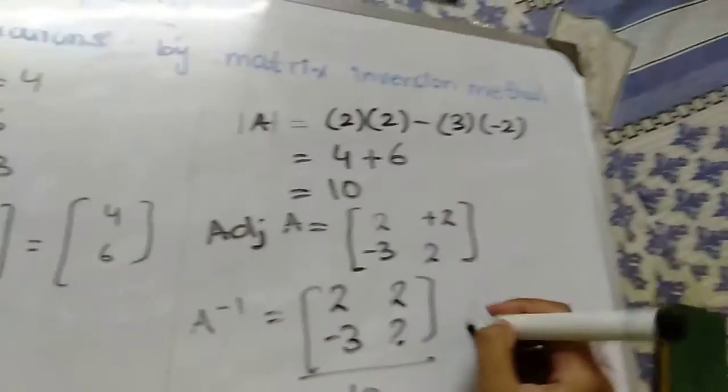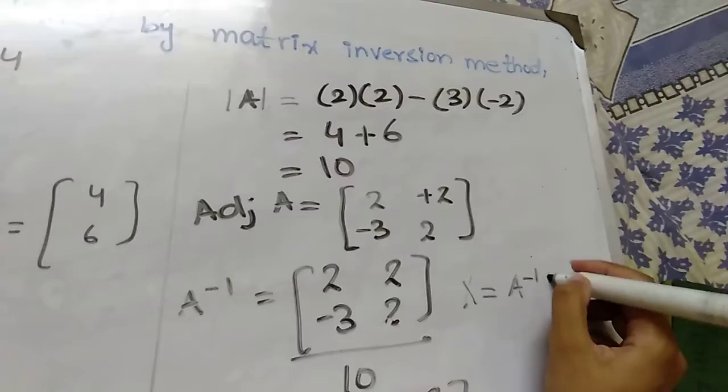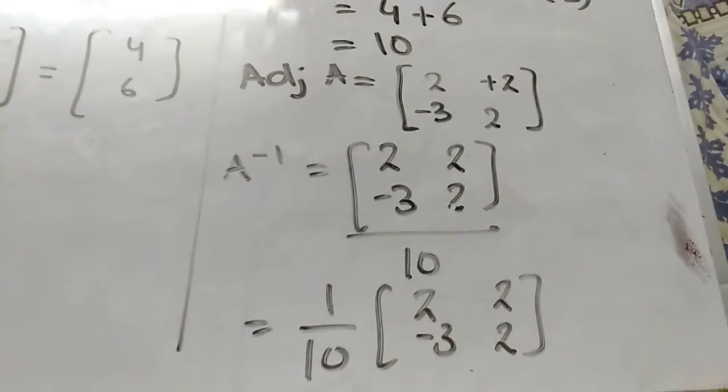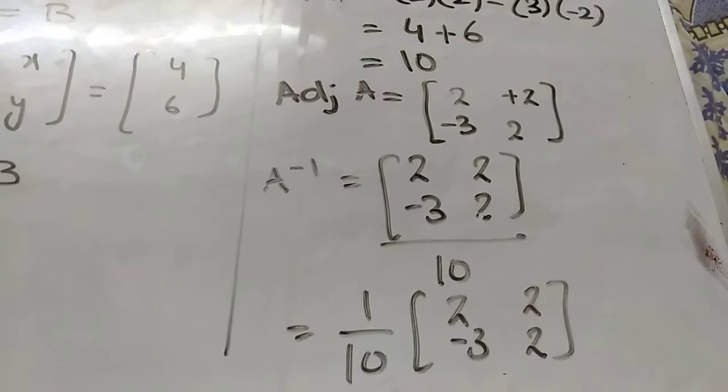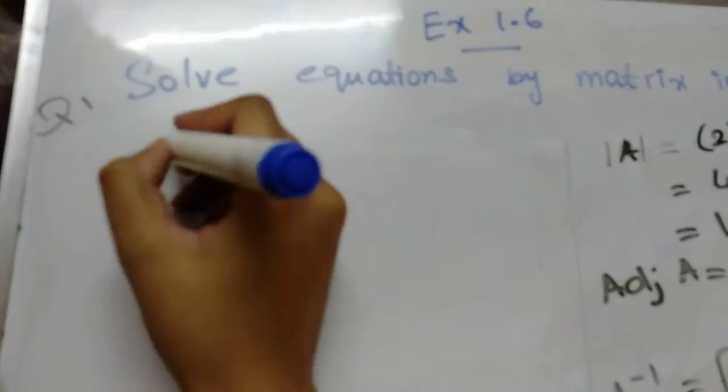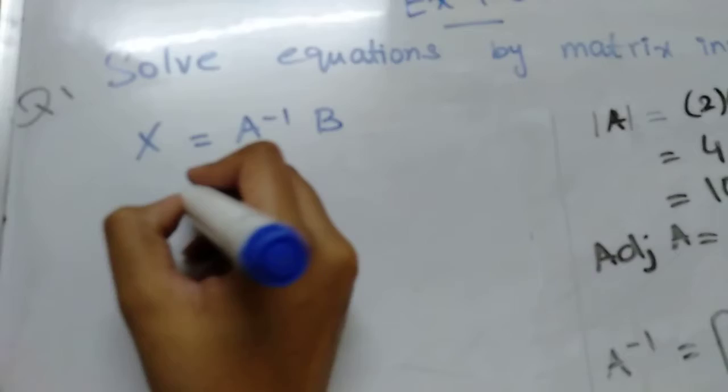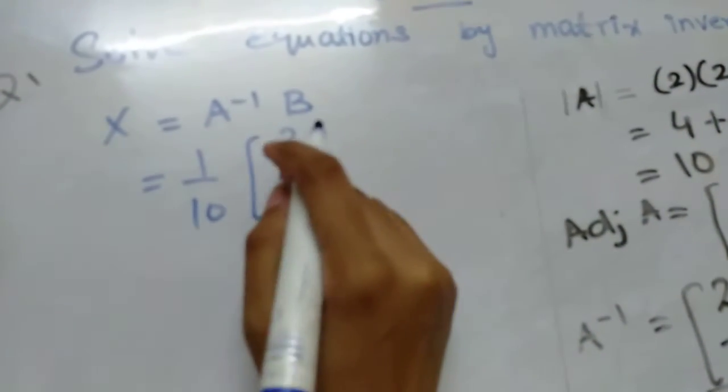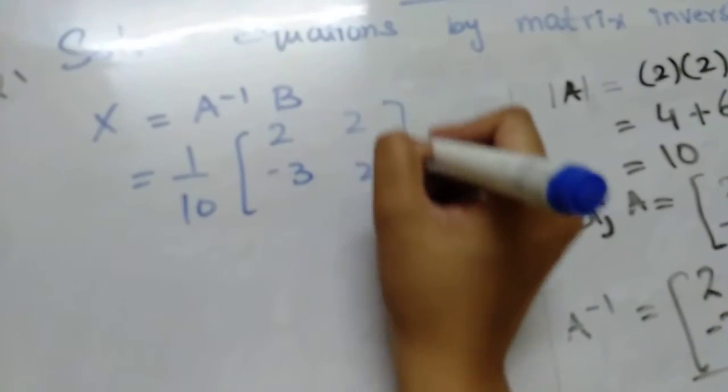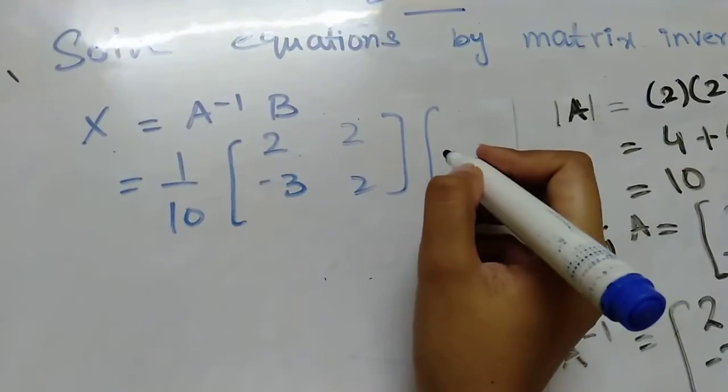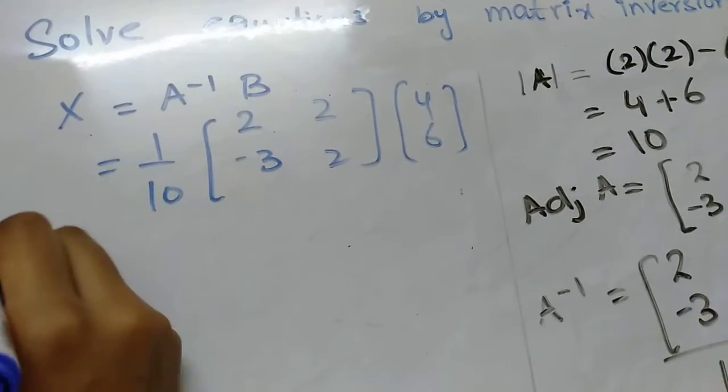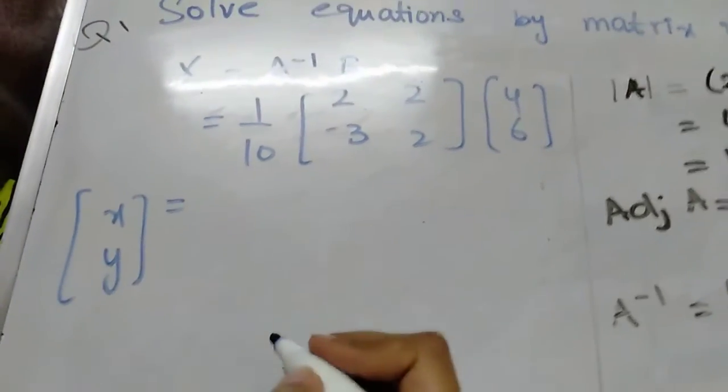Now we just have to find X. We just have to multiply A inverse with B. So A inverse is 1 by 10, 2, minus 3, 2, and 2. And B is 4 and 6. So we have to multiply this and we will have our answer. We can also write the X matrix over here.